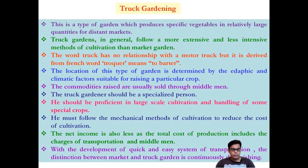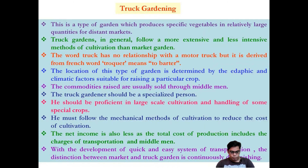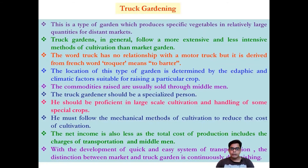In India, market gardening produces fruits such as apple, banana, citrus fruits, grapes, lychee, and mango. Muzaffarpur in Bihar is famous for lychee production. India produces over 46 million tons of fruits every year, accounting for 10 percent of the world's total fruit production. Mango accounts for 39 percent of fruit production, and is famous in the summer season.